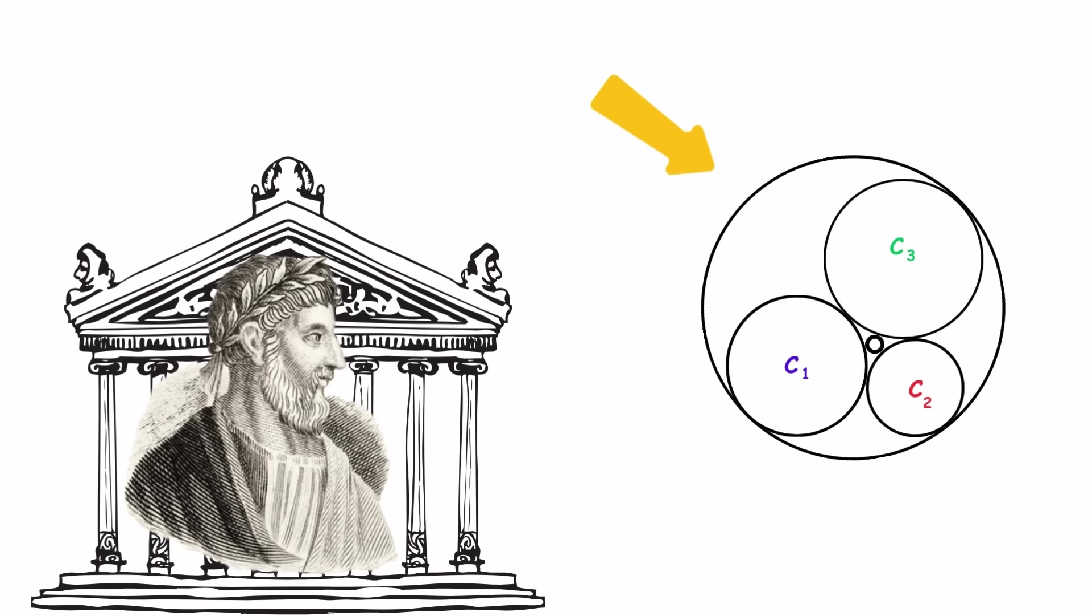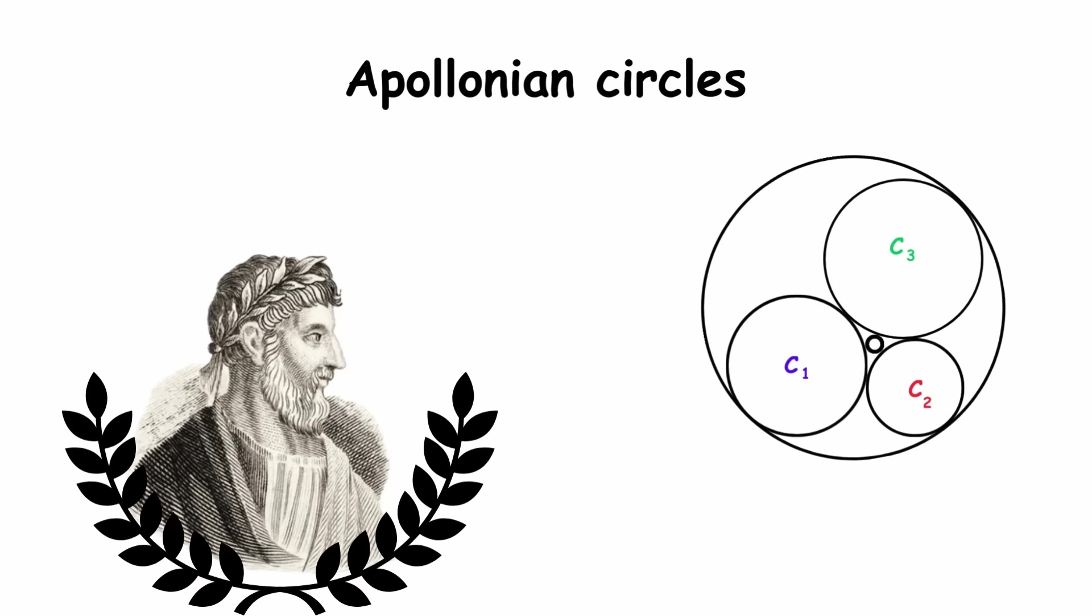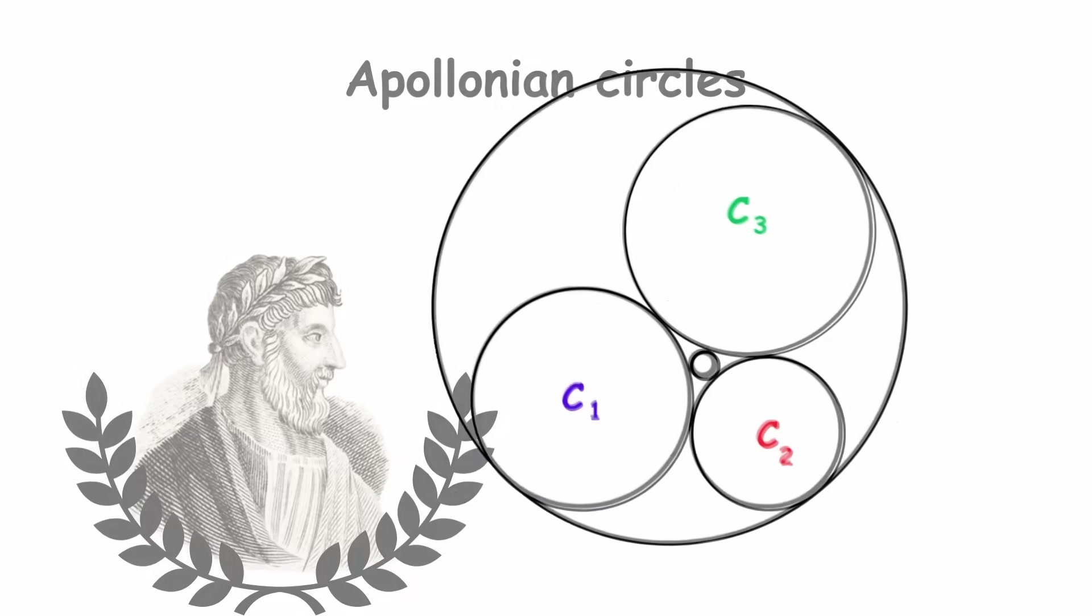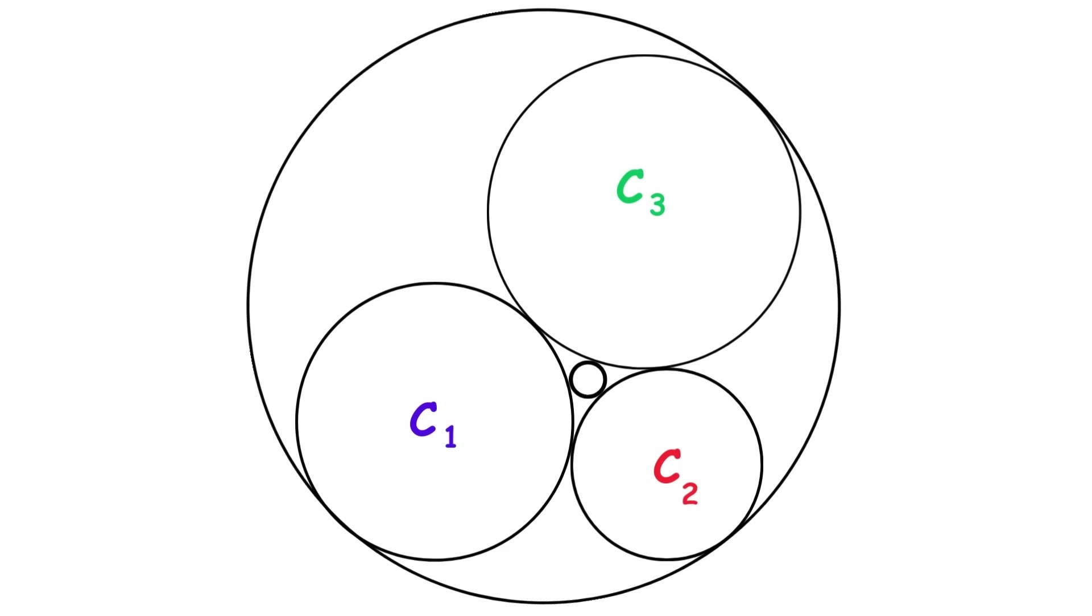Because of this, when five circles are arranged in this way, they are called Apollonian circles, in his honor. Now that we have these five circles, let's keep drawing even more. Inside of the largest circle, but outside of all the circles contained within,